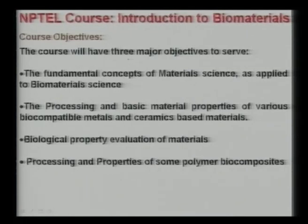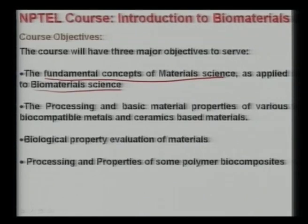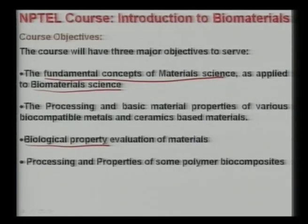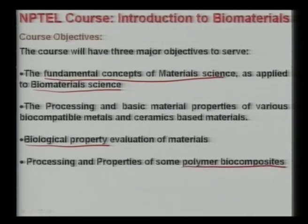By the end of the course, it is expected that students will be able to understand the fundamental concepts of material science required for biomaterial science. Second, processing and basic material properties of various biocompatible metals, ceramics, and polymer-based materials. Third, biological property evaluation — what typical biological properties need to be evaluated to understand the potential application of a given biomaterial. Finally, processing and properties of some polymer biocomposites, which are the most recent developments in the field.